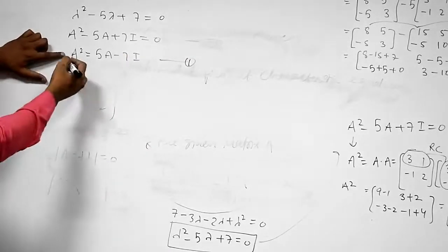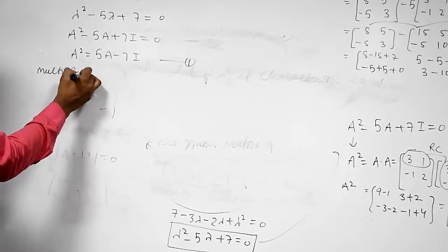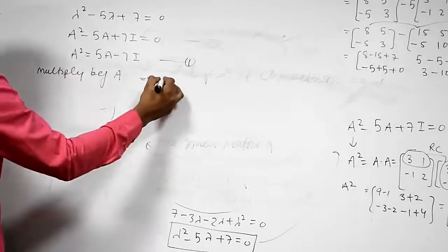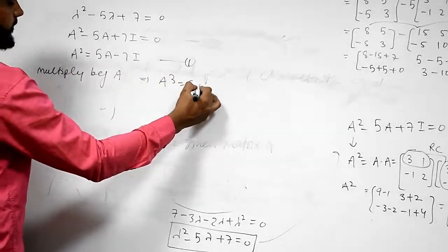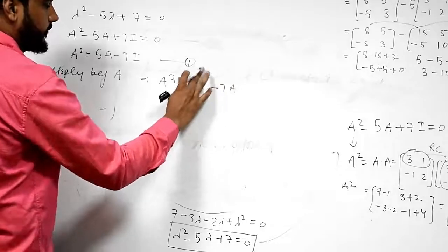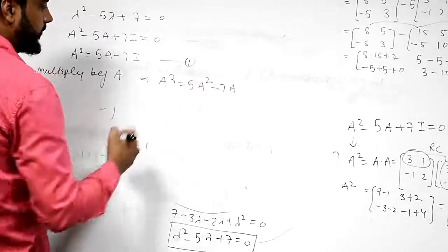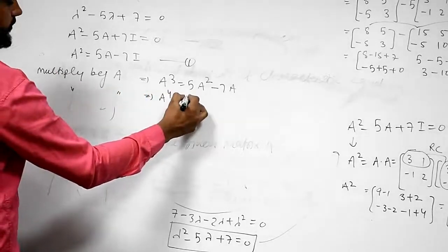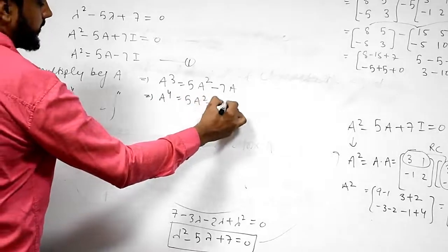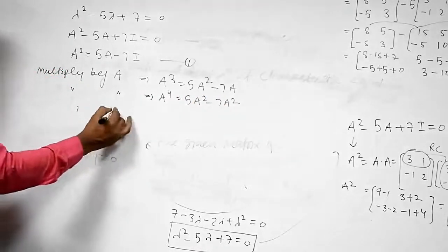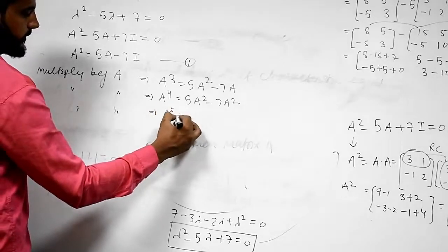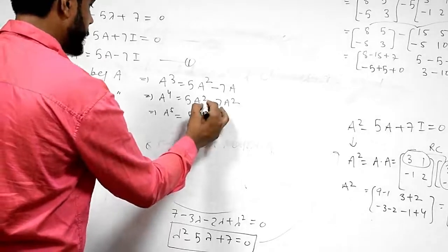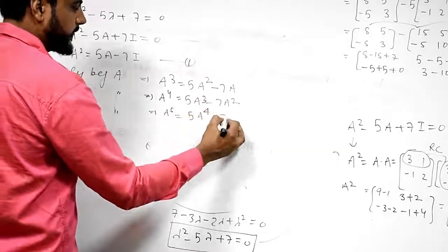Now I will multiply equation 1 by A. So A cubed equals 5A squared minus 7A. Multiply again by A: A to the 4th equals 5A cubed minus 7A squared. Multiply again by A: A to the 5th equals 5A to the 4th minus 7A cubed.